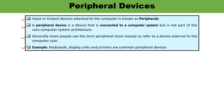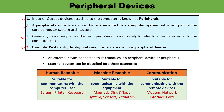Any external device which can be connected to the IO module is what we call a peripheral device or peripherals. When talking about external devices that can be connected to the computer, there are three possible categories depending upon the kind of function. One is human readable — external devices which are suitable for communication with the users. You can communicate with the computer with the help of the keyboard, screen, or printer.